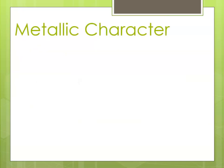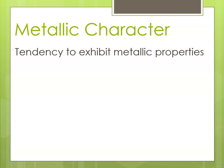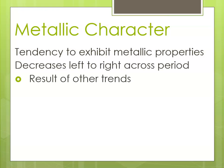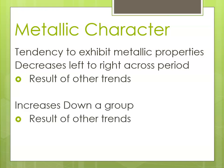Finally, metallic character is the tendency to exhibit metallic properties. For our purposes, metallic properties can be thought of as the tendency to lose electrons and form positive cations. It decreases from left to right across a period, and it increases from top to bottom down a group — both as a result of the other trends.